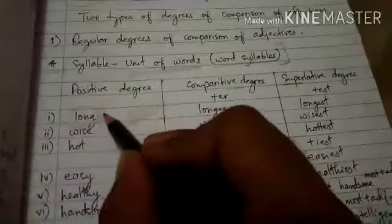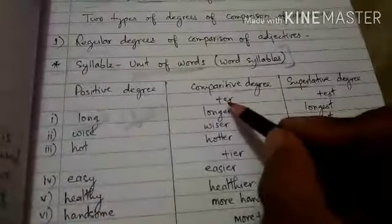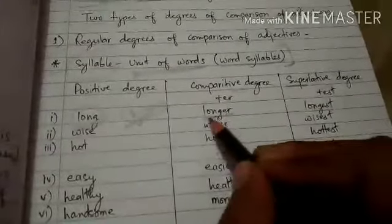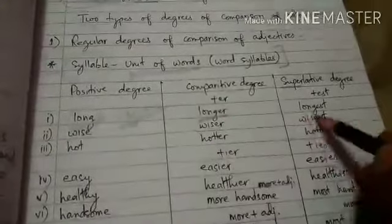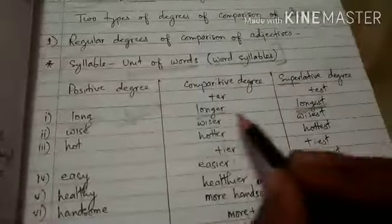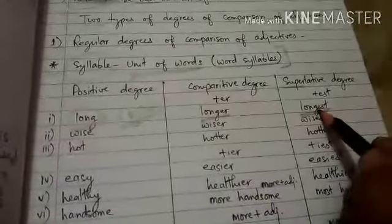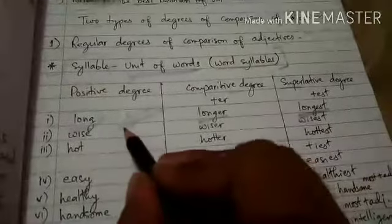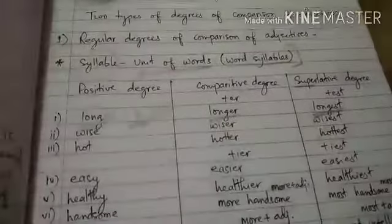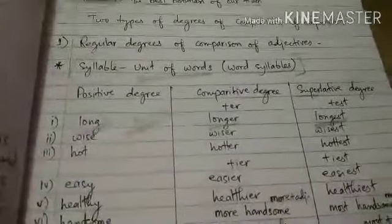If an adjective is a single-syllable word, in the comparative degree we add ER, and in the superlative degree we add EST. For example: long → longer → longest. Similarly: short → shorter → shortest.